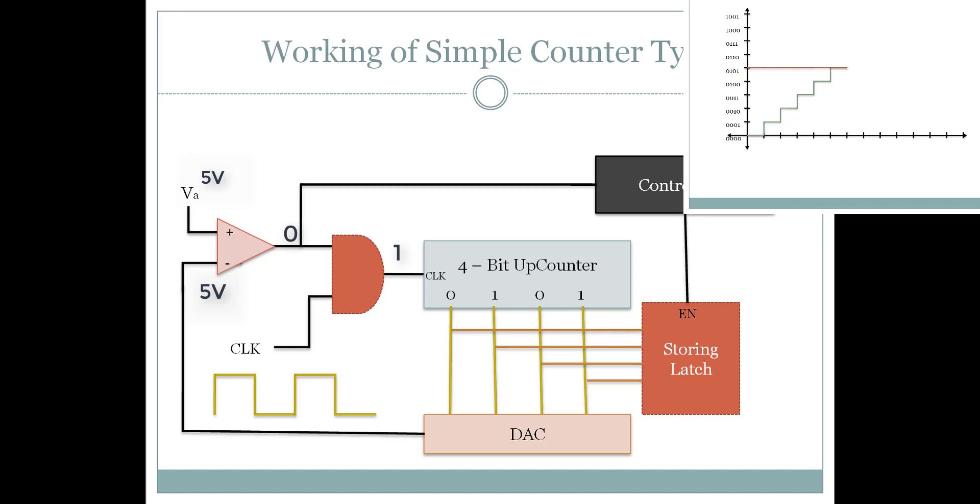The clock input now becomes 0. Logical 0 from the comparator output triggers the control unit. It enables the storing latch to store the bits in the counter and then commands clear to the counter for the next cycle. Each step takes at a specific interval equal to T clock. The cycle continues over and over for each sample.